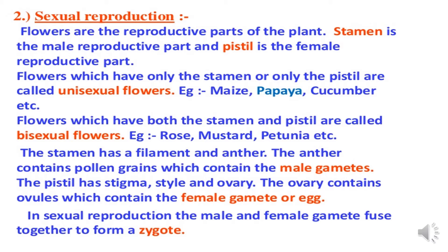Flowers which have only one reproductive part are called unisexual flowers, and examples are maize, papaya, and cucumber. Flowers which have both stamen and pistil — meaning both male and female parts — are called bisexual flowers; examples are rose, mustard, and petunia.